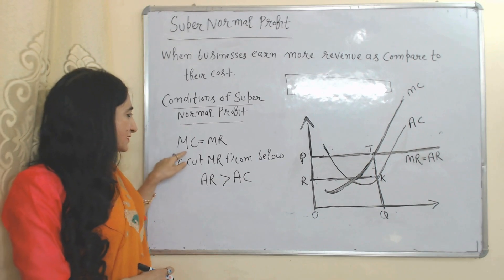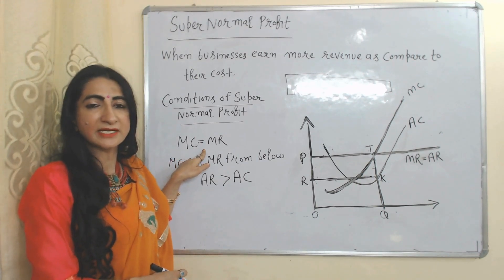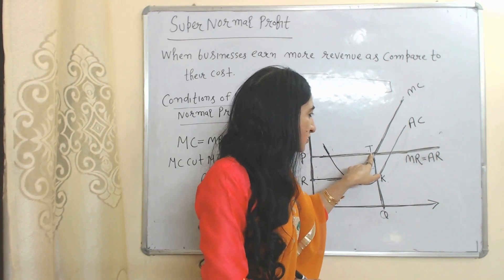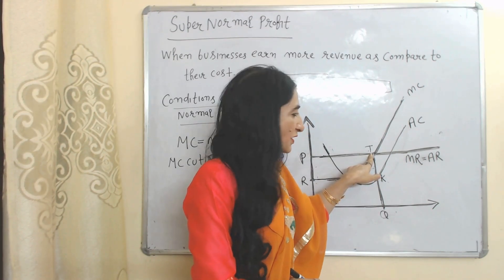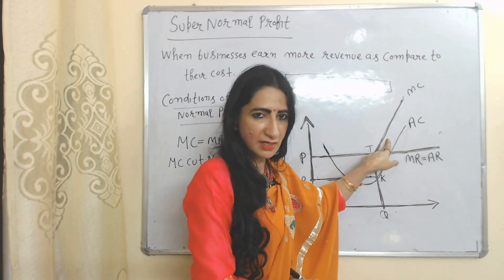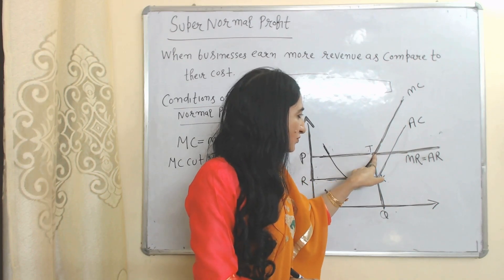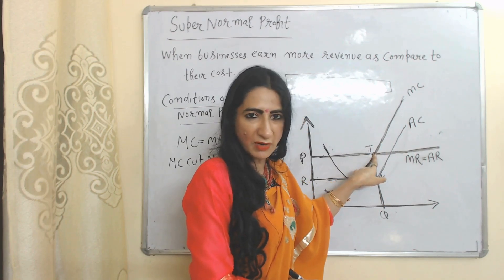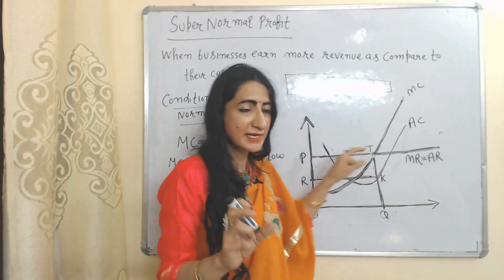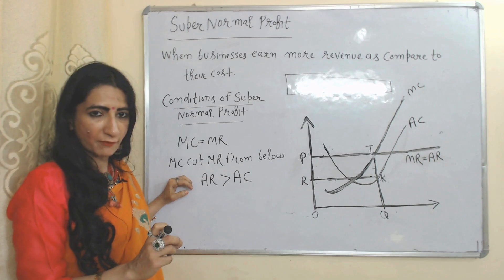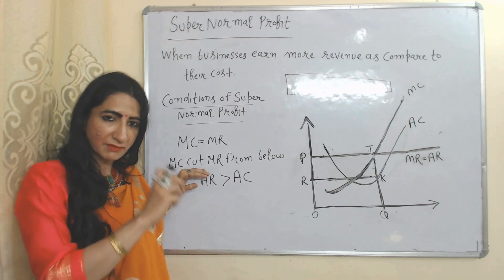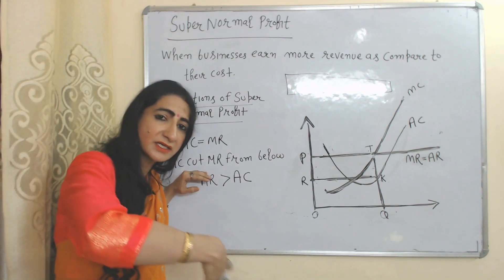There are three conditions of super normal profit. First: MC equal to MR — at this T point you can see marginal cost is equal to marginal revenue, so the first condition is satisfied. Second condition: MC cuts MR from below — that means marginal cost becomes equal to marginal revenue by cutting from below, so our second condition is also satisfied at this T point.